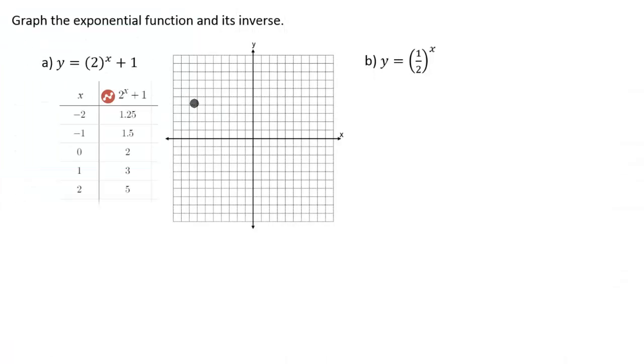So now imagine this is my paper, and we have our table written here as well as a coordinate system. I'm going to plot all these points. I'm going to start with this first one: negative 2, comma, 1.25, so that's going to be roughly right around here. Negative 1, comma, 1.5 is going to be right around here, very close. 0, comma, 2 right there. 1, comma, 3 here. And then 2, comma, 5 will be right about here.